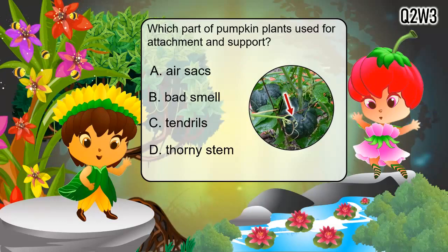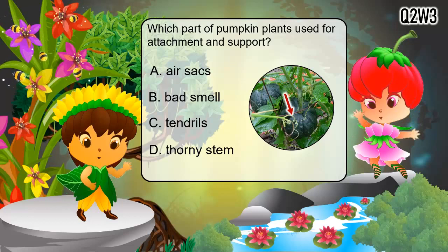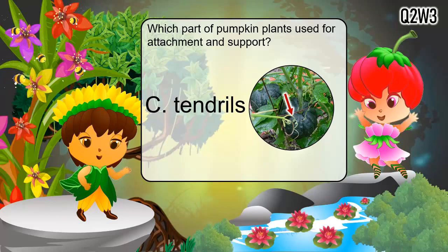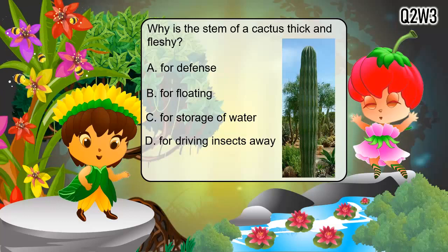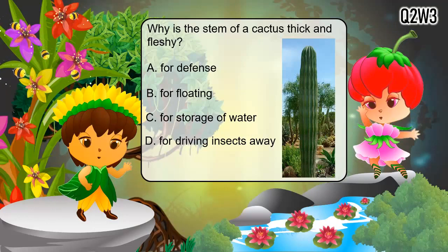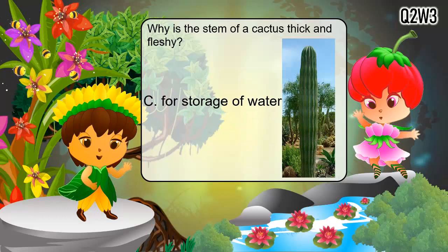Which part of pumpkin plants is used for attachment and support? A. Air sacs. B. Bad smell. C. Tendrils. D. Thorny stem. The correct answer is C — tendrils. You're amazing! Why is the stem of a cactus thick and fleshy? A. For defense. B. For floating. C. For storage of water. D. For driving insects away. The correct answer is C — for storage of water. Great job!